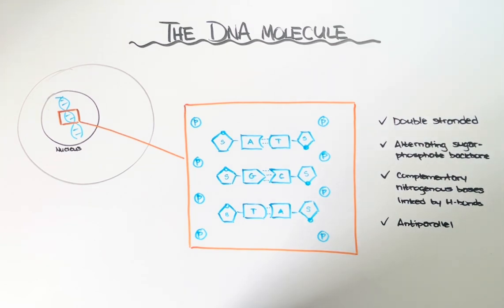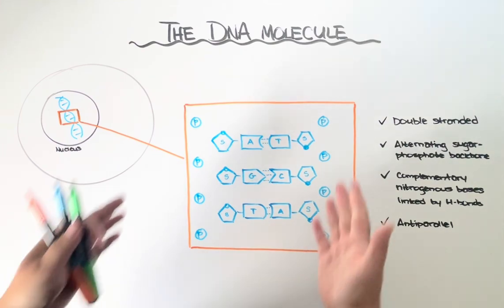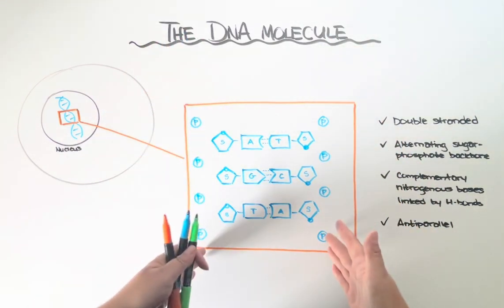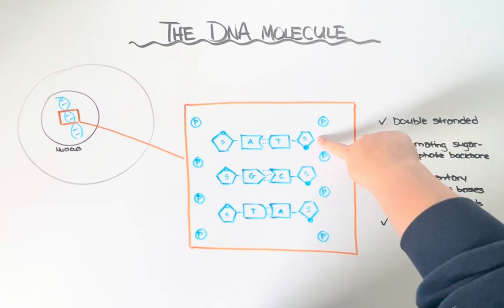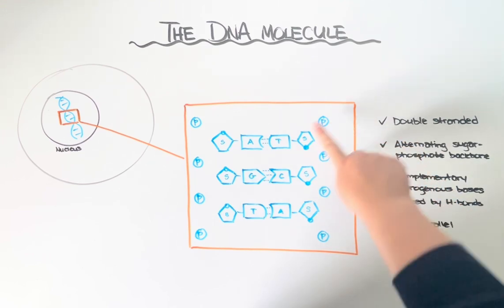Starting first with this alternating sugar-phosphate backbone. DNA molecules are held together, like the sides of a ladder, by sugars, which are a deoxyribose sugar, and phosphate molecules.